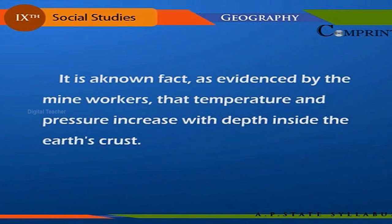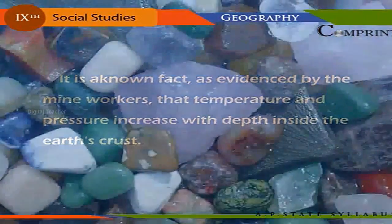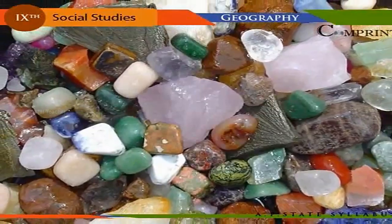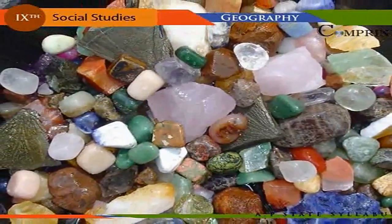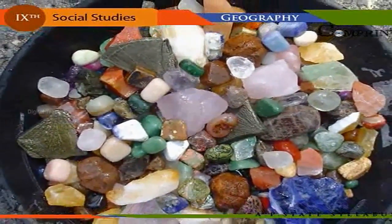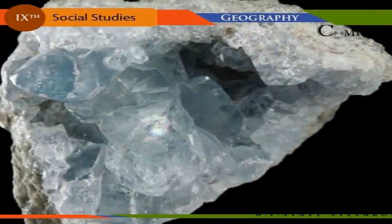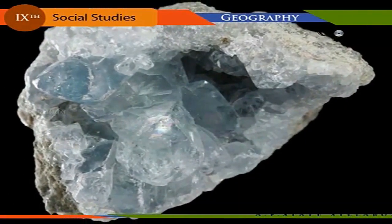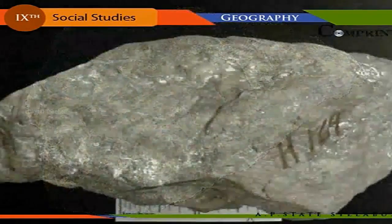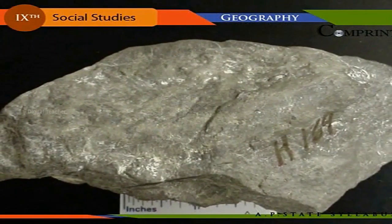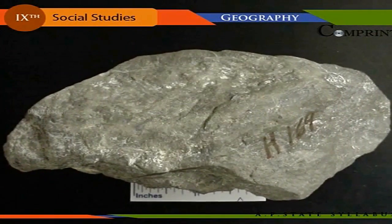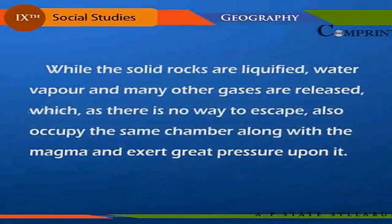Volcanoes. It is a known fact, as evidenced by mine workers, that temperature and pressure increase with depth inside the Earth's crust. The outer layers of the Earth consist of layers of rock containing different types of minerals. Some minerals are called radioactive minerals — such as radium, uranium, thorium, and plutonium — which continuously emanate heat. When present in deep-seated rocks, the heat emitted gets accumulated, as rocks are bad conductors of heat.